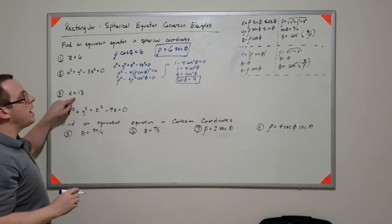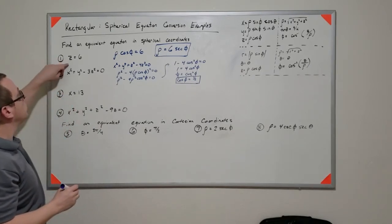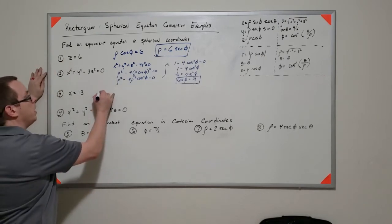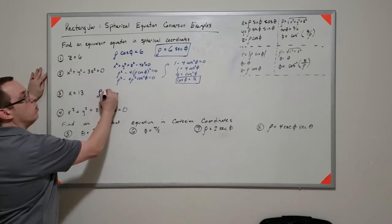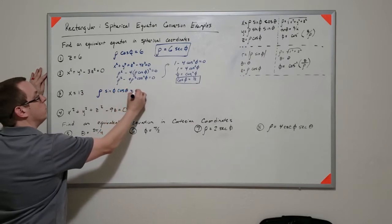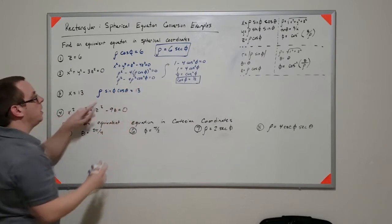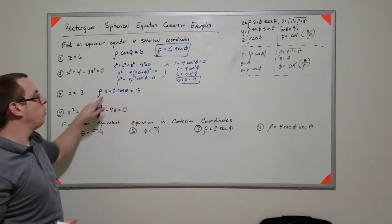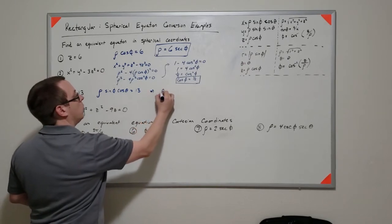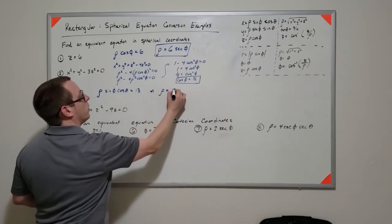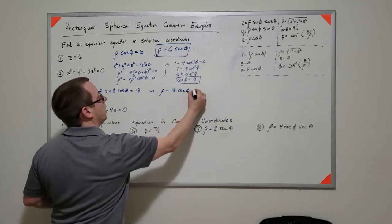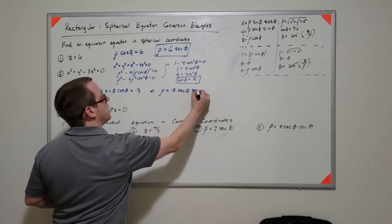In this case x equals 13. That's handled similarly to z. You would say ρ sine φ cosine θ equals 13, and isolating ρ gives ρ equals 13 cosecant φ secant θ.